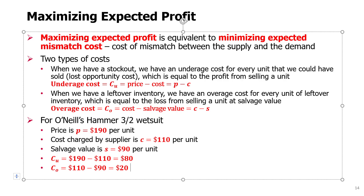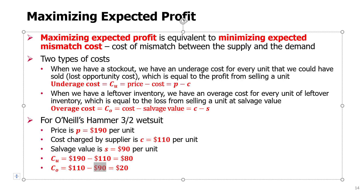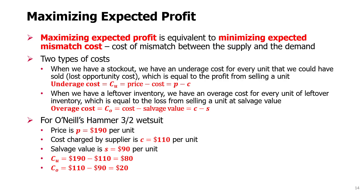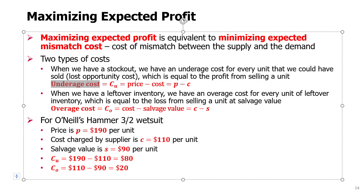One comment here: the overage cost is the real cost we experience with leftover inventory. We paid $110 and we sell a leftover unit for $90, so the overage cost is real. The underage cost, however, is a lost opportunity cost — it isn't an actual cash outlay. It represents the reduction in our potential profit: the number of units we could have sold times the lost opportunity cost per unit.